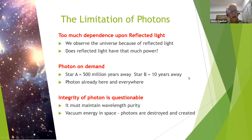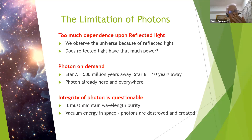Secondly, photons on demand. For example, you look at a star which is 500 million light years away, so the photon is traveling for 500 million years from the star toward you. Just to give you a perspective, the dinosaurs roamed on Earth 250 million years ago. So this photon has been traveling for 500 million years to reach you. It hits your retina and then you observe that star there.